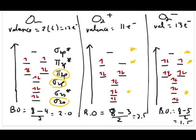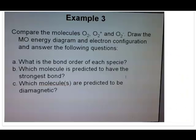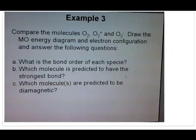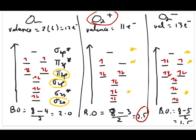Bond order is directly proportional to bond strength, so O2+ has the strongest bond because it has the largest bond order of 2.5. As for which species are diamagnetic: a species is diamagnetic only if all electrons are paired, and paramagnetic if even one electron is unpaired. Looking at all three species, none of them has all electrons paired, so all oxygen species here are paramagnetic — none is diamagnetic.